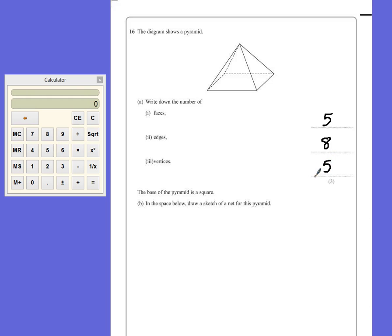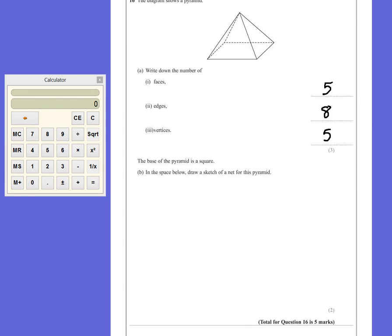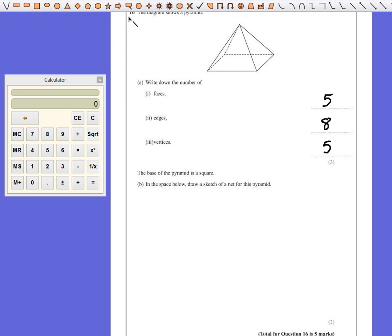The base of the pyramid is square. In the space below, draw a sketch of the net. So because it's a sketch, it doesn't have to be too accurate. We're just looking to see what the shapes should be and how it's built.